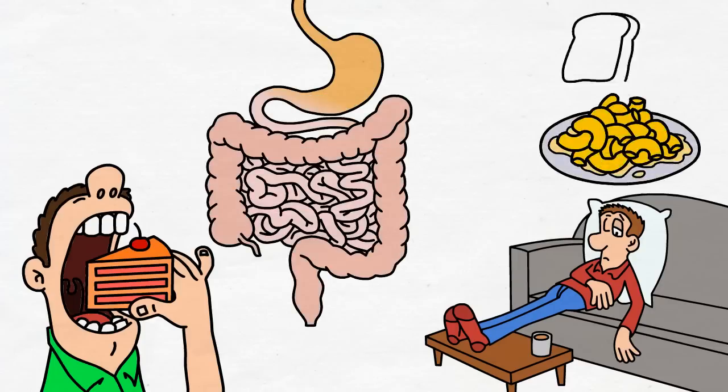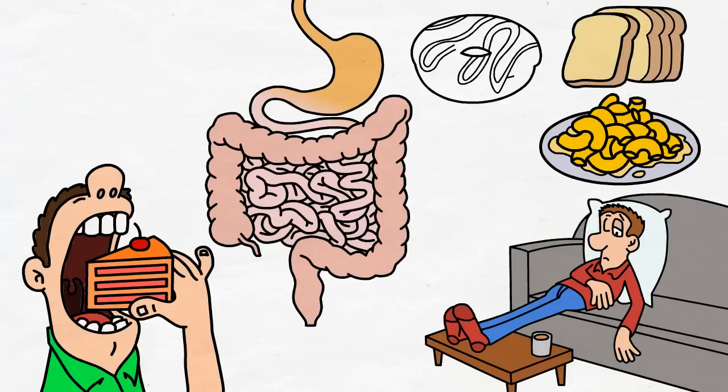However, what can make it even worse are meals that are made out of simple carbs, such as sugar. When you eat simple carbohydrates, your blood glucose tends to spike up, giving you temporary energy.